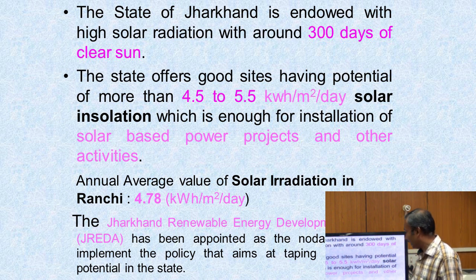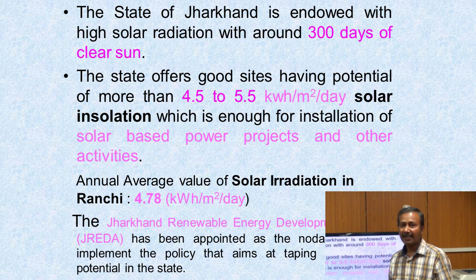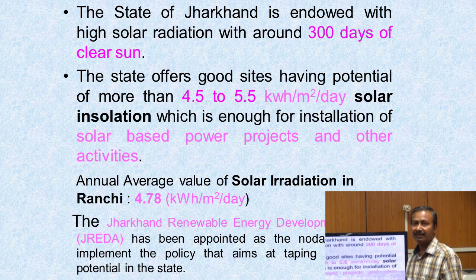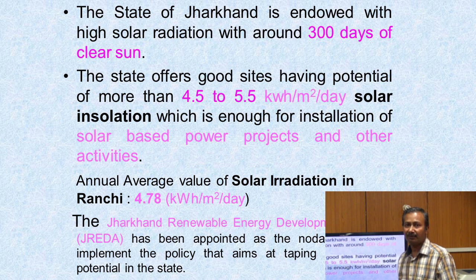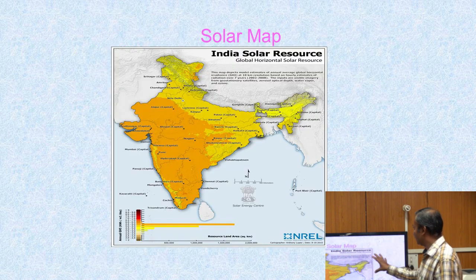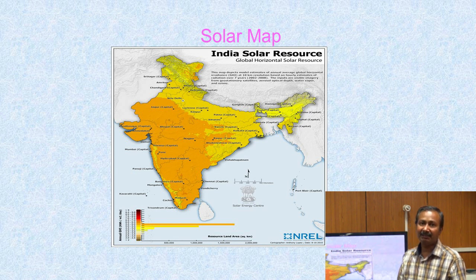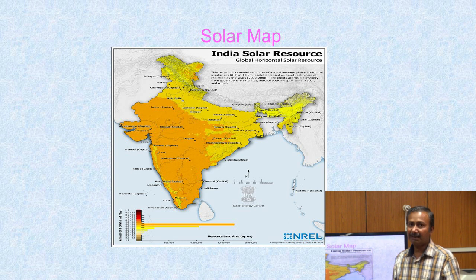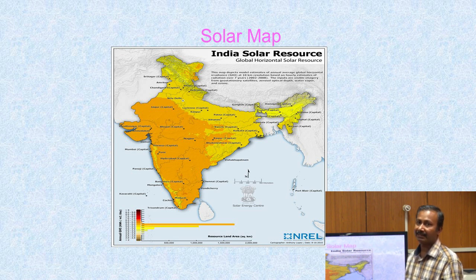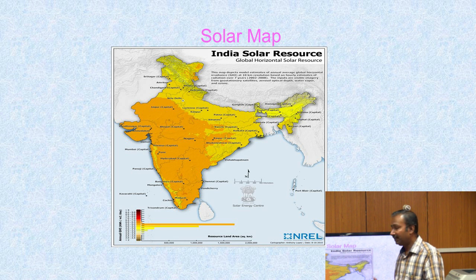JAREDA works in different sectors of energy like solar energy, wind power energy, and biomass energy. This solar map gives an idea about which state is receiving how much solar radiation intensity. Rajasthan receives maximum solar intensity, followed by Gujarat and Maharashtra, and Jharkhand also receives a good amount of solar radiation. Based on this data, one can design different types of equipment for harnessing solar energy.